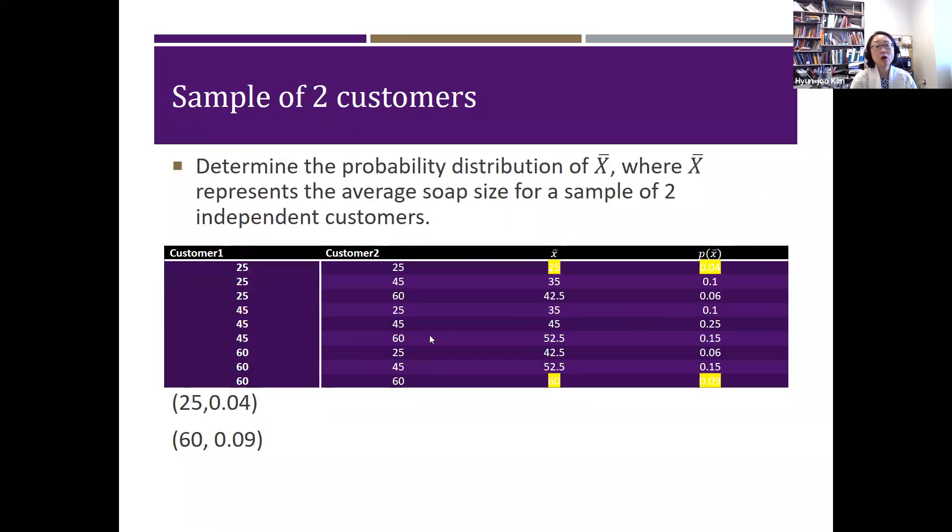Okay, now we're going to think about sampling distribution. Let's start with actually very small sample. Say that we have two customers, then they're going to, two customers who actually bought the dishwasher soap. Determine the probability distribution of X bar, and X bar representing the average soap size of sample of two independent customers. So here is the customer one, and here's customer two.